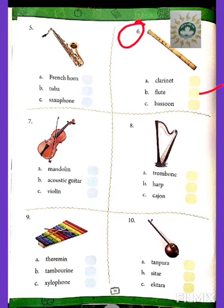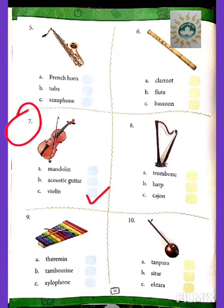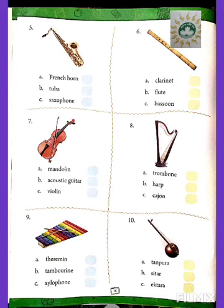Number six is the flute and it's an Indian musical instrument. The seventh one is a violin, and this too is an Indian musical instrument. It is generally used in Indian classical music.